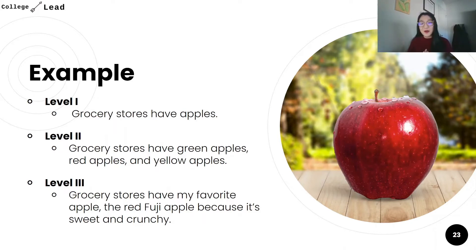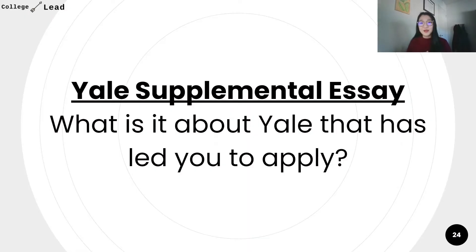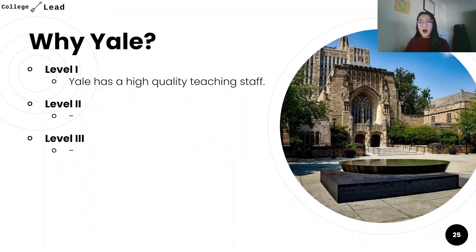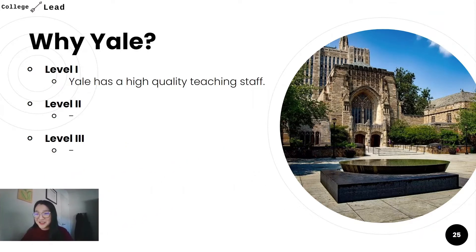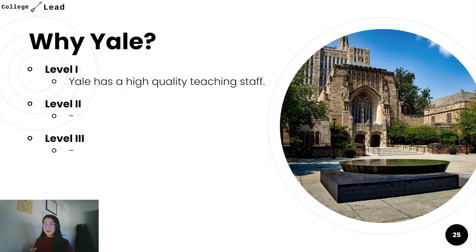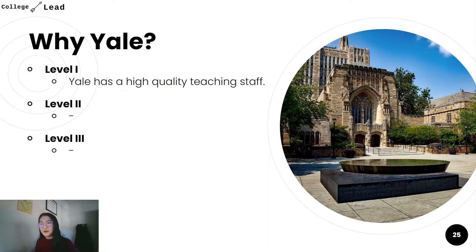Let's use a specific example inspired by an actual college essay prompt. A question if you're applying to Yale is: what is it about Yale that has led you to apply? The core of this prompt is essentially asking you, why Yale? And in this answer, you want to be as specific as possible. A level one version of the why Yale question could be: Yale has high quality teaching staff. True, but a lot of other colleges have high quality teaching staff as well - Harvard, USC, UC Berkeley, Stanford - literally every college in the US will say that they have a high quality teaching staff.